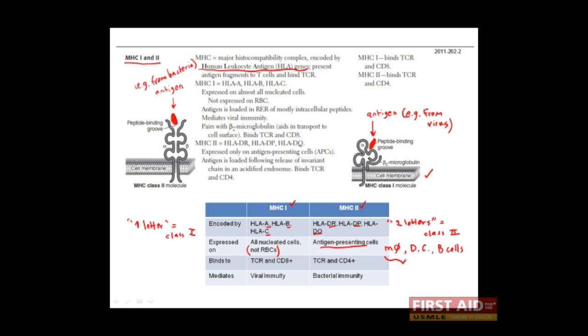Macrophages and dendritic cells, of course, are part of the innate system, while B cells are part of the adaptive. Nevertheless, these are the three main antigen-presenting cells in the entire body.